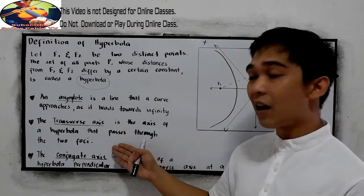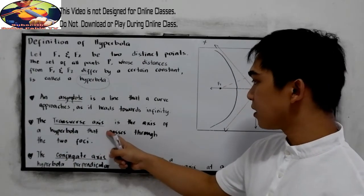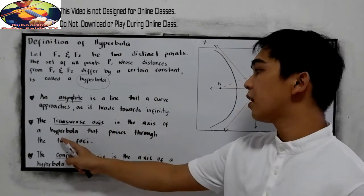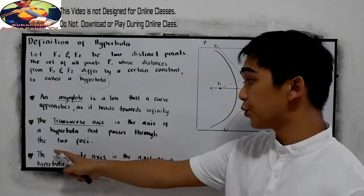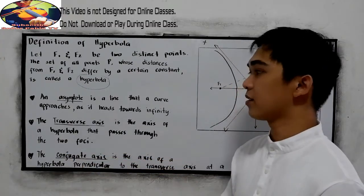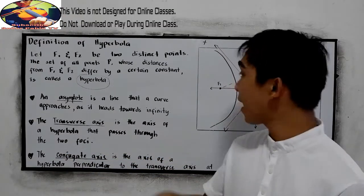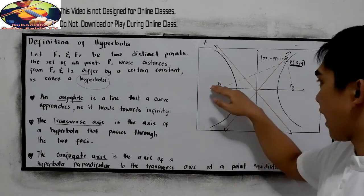We also have the transverse axis, which is the axis of the hyperbola that passes through the two foci.